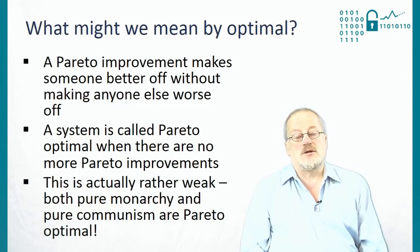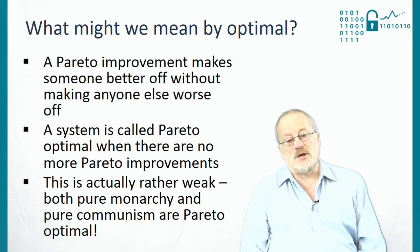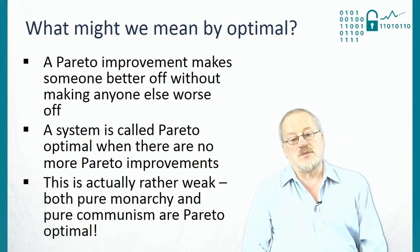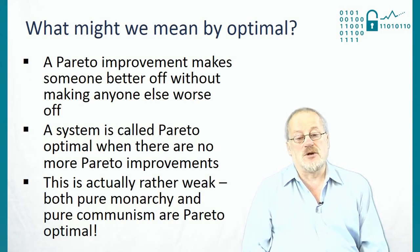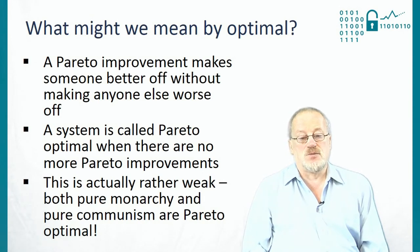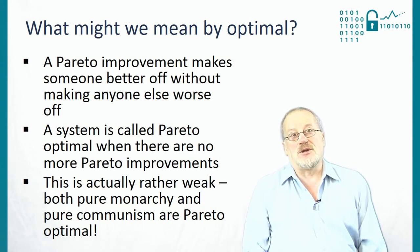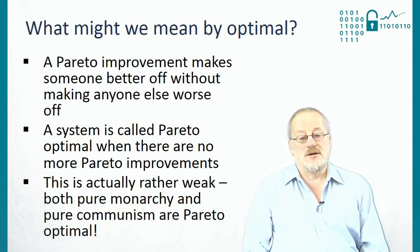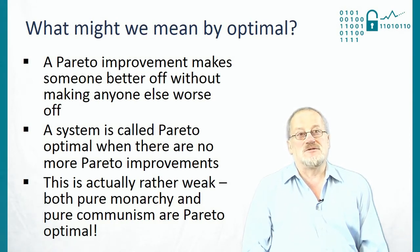Before thinking about monopoly, we need to ask: what do we mean by optimal or efficient? The key idea goes back to the Italian economist Vilfredo Pareto a hundred years ago. A Pareto improvement is any change that makes someone better off without making anybody else worse off. A system is Pareto optimal when no further Pareto improvements are possible. This is actually a weak condition — both pure monarchy and pure communism are Pareto optimal. In pure monarchy the king owns everything, so you can't give anyone else anything without making the king worse off. In pure communism everyone gets exactly the same, so you can't give anyone more without making someone else worse off.